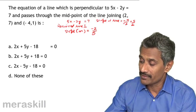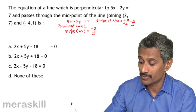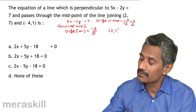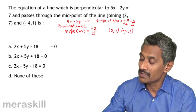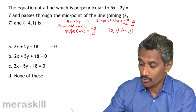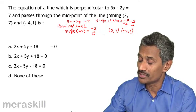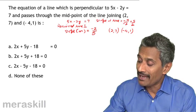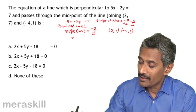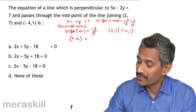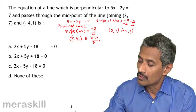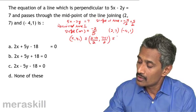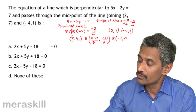The slope of the required line is minus 2 by 5, and it passes through the midpoint of the line joining 2 comma 7 and minus 4 comma 1. The midpoint is the average of the coordinates: x1 is 2 plus minus 4 by 2, which is minus 2 by 2, equals minus 1. y1 is 7 plus 1 by 2, which is 8 by 2, equals 4.